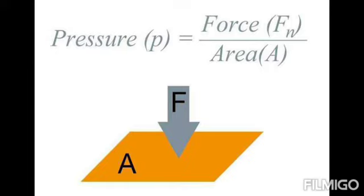We have defined pressure in terms of force. Pressure can also be defined in terms of another force called thrust. If you put any force on any surface perpendicularly, when it becomes a 90-degree angle — as you can see in this slide — the force acting on the body perpendicularly to its surface is called thrust. So the formula becomes: pressure equals thrust upon area.